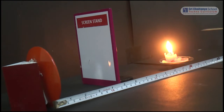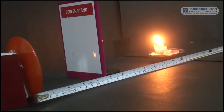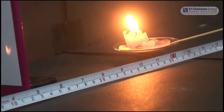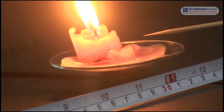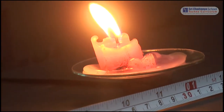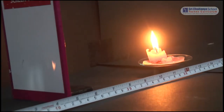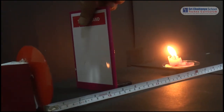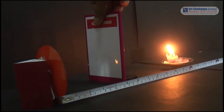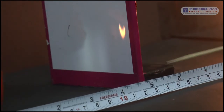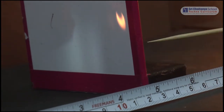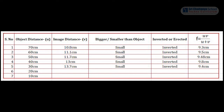Now move the object a little forward and keep it at 30 cm from the mirror. The object is placed at 30 cm. Again we will repeat the same thing to trace the image by adjusting the screen back and forth. In this case, we got the image at nearly 13.7 cm. Object distance 30 cm, image distance 13.7 cm, and from the formula the focal length will be 9.4 cm.